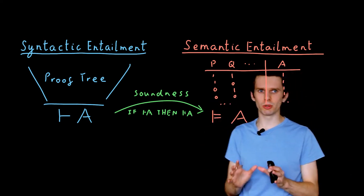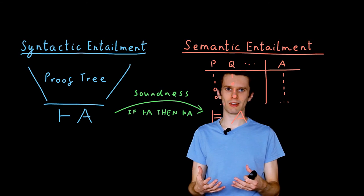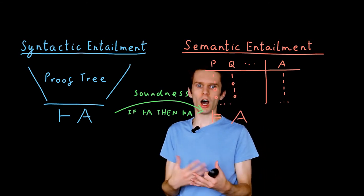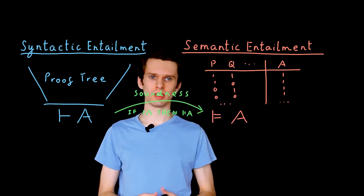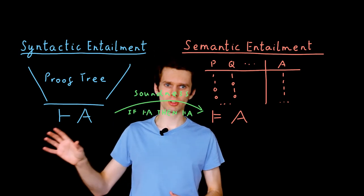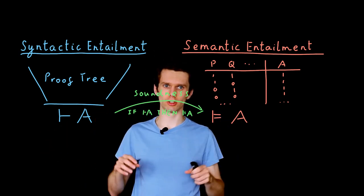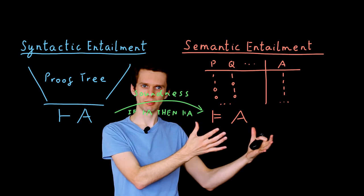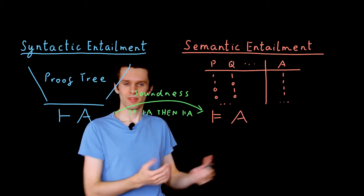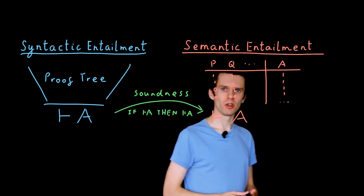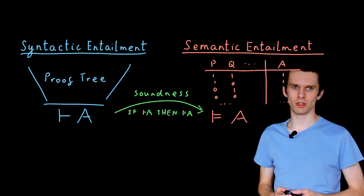This is the key property that we want our logic to have. If we don't have this property, our logic is basically useless. Because if we show something is true, if we prove it is true, and it turns out not to be, then we've defeated the point of having a logic in the first place.